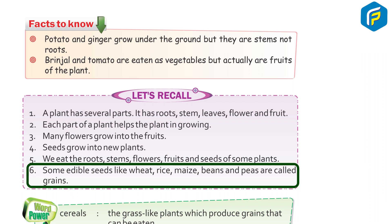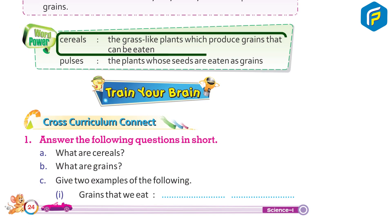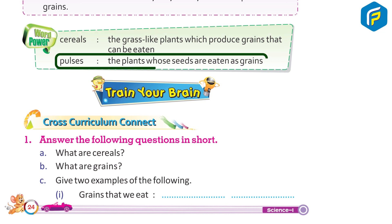6. Some edible seeds like wheat, rice, maize, beans and peas are called grains. Word Power: 7. Cereals — the grass-like plants which produce grains that can be eaten. Pulses — the plants whose seeds are eaten as grains.